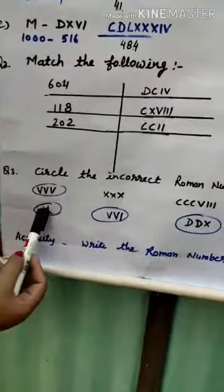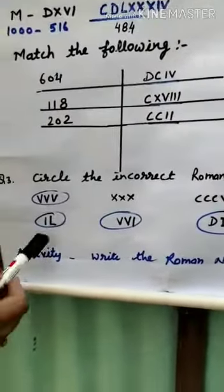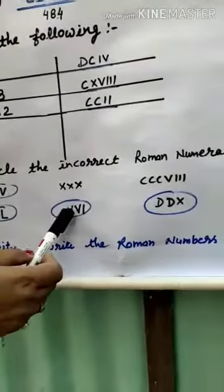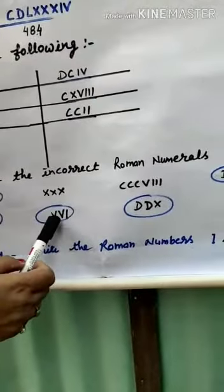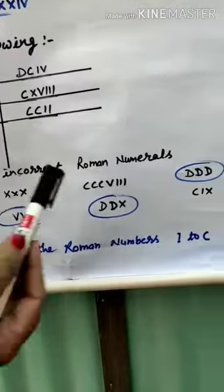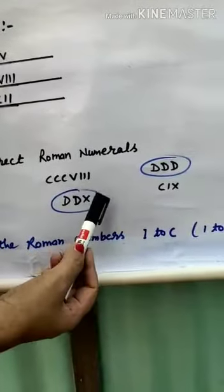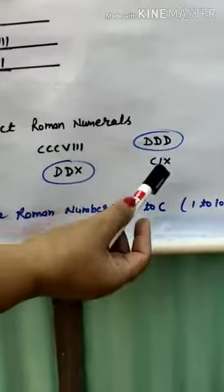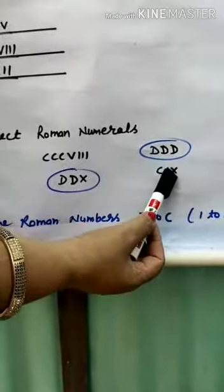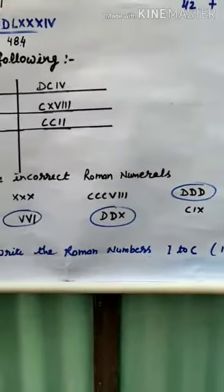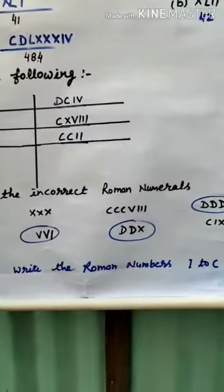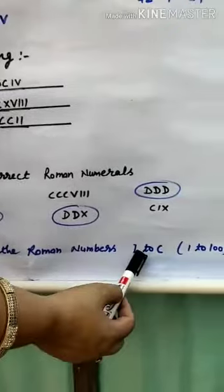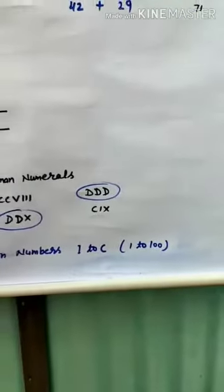IL is wrong because you cannot subtract I from L directly. VVI is wrong because V is repeated. DDX is wrong because D is repeated. CIX is correct. For the activity: Write Roman Numerals I to C, meaning Roman counting from 1 to 100.